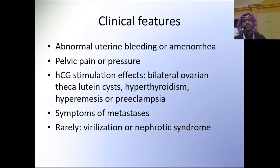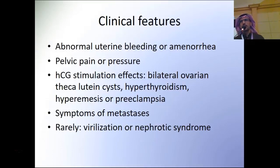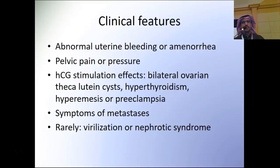Clinical features: patients can present with abnormal uterine bleeding after molar or non-molar pregnancy; amenorrhea, which is more common after non-molar pregnancy; pelvic pain or pressure, mainly due to uterine enlargement or bilateral ovarian complex cysts; beta-HCG stimulation effects like bilateral ovarian theca-lutein cysts; hyperthyroidism; and rarely hyperemesis or preeclampsia; as well as symptoms of metastasis.